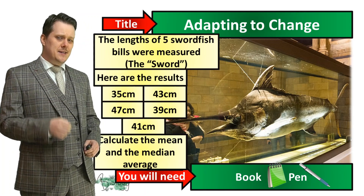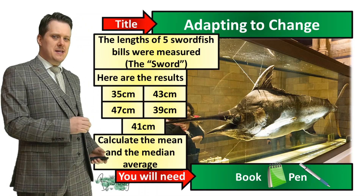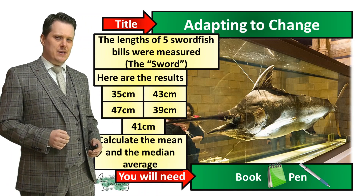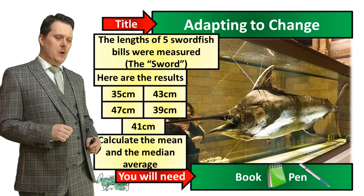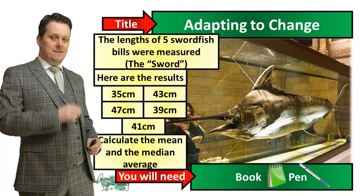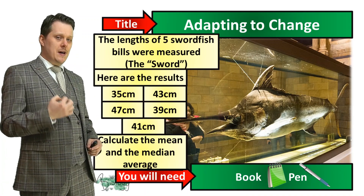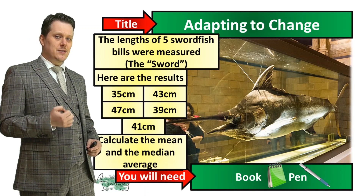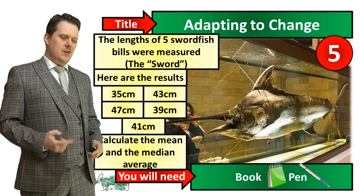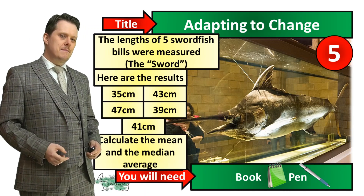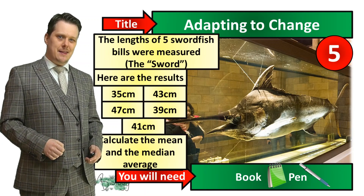For your starter activity, I would like you to calculate the mean and median average of this data set, which shows the lengths of five swordfish bills, which we refer to as the sword. I'm going to put five seconds on the clock. If you need more time, pause the video, and when you're finished, we'll go through the answers together.